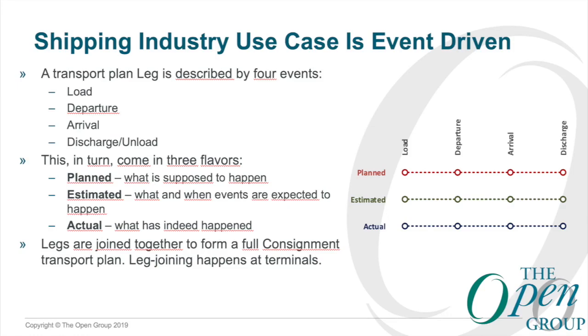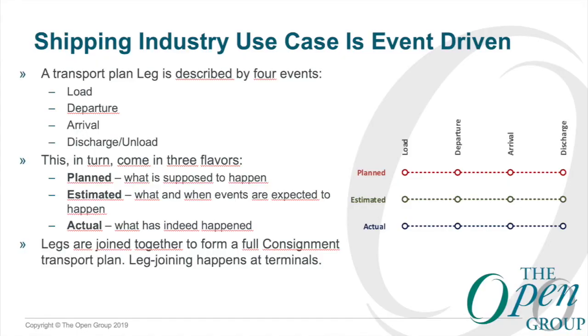Their problem is very complex. In the shipping industry you've got all these legs — whether it's the train, the ship, or the truck. You load cargo, you depart, you arrive, and you discharge or unload whatever you're carrying. Then it goes on to the next carrier, and the next. In addition, they have a plan for all four of those events. Then something happens, you have to adjust it — so it becomes an estimated time. Then you've got an actual. So you're keeping track of a log of all the date-times of all these things, which all have to ultimately be reported.